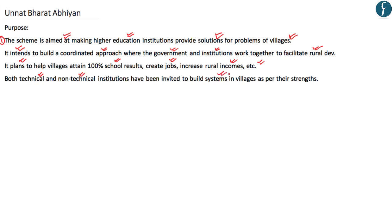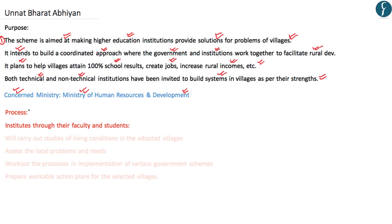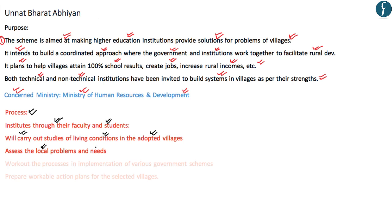The concern ministry for the Unnat Bharat Abhiyan is the Ministry of Human Resource and Development. The scheme is implemented through faculties and students of higher education institutes that have adopted villages. They carry out studies of living conditions, assess local problems and needs, and then work out a process for implementation of various government schemes to solve those problems.